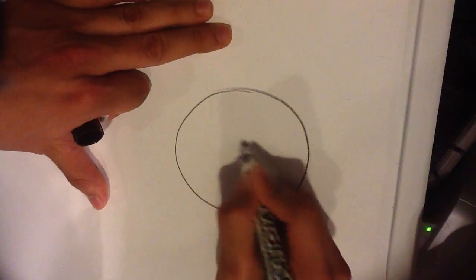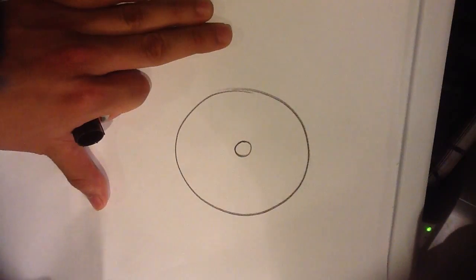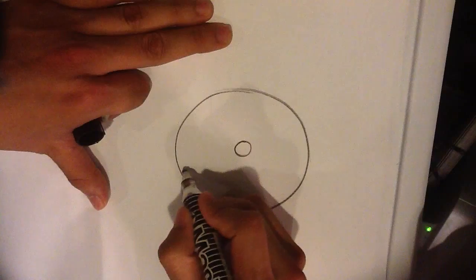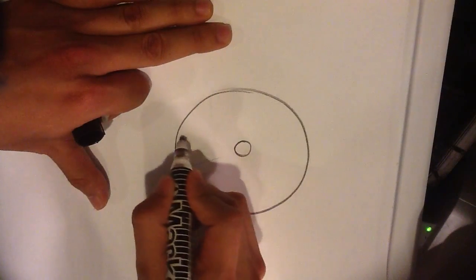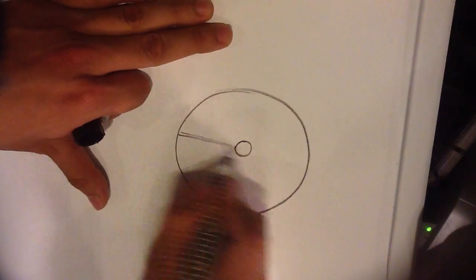And then make a smaller circle in the middle. And then from there, you can make some lines from the outside, going inward, like it's the shine.